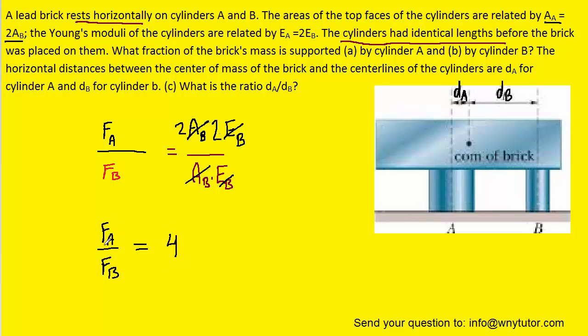The ratio of force A to force B equals 4. In other words, the force exerted on the top of cylinder A is equal to 4 times the force exerted on the top of cylinder B.